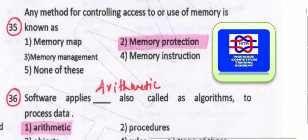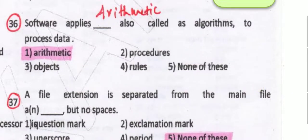Any method for controlling access to or use of memory is known as memory protection. Software applies arithmetic — also called algorithms — to process data. This is what you have to remember: software applies arithmetic, also called algorithms, to process data.